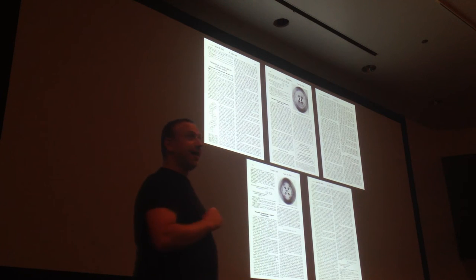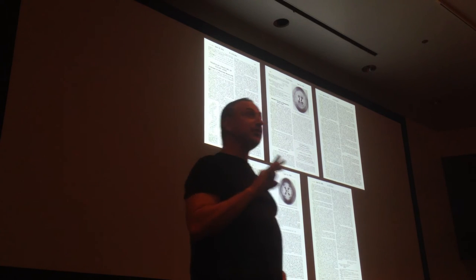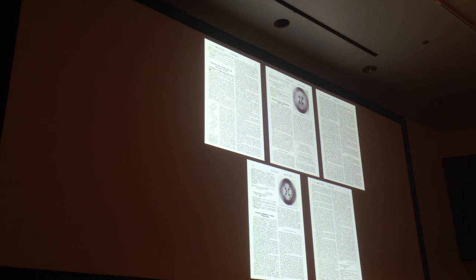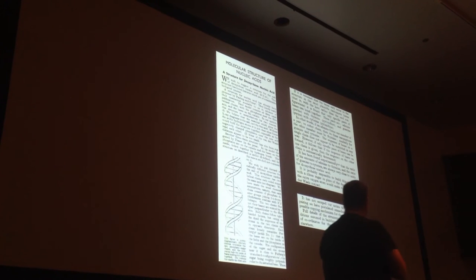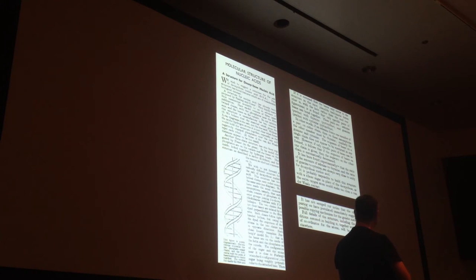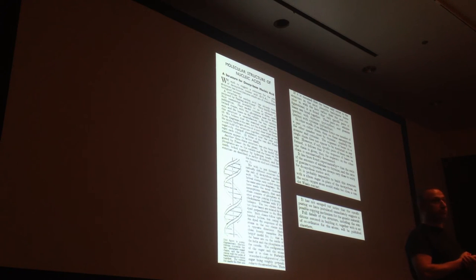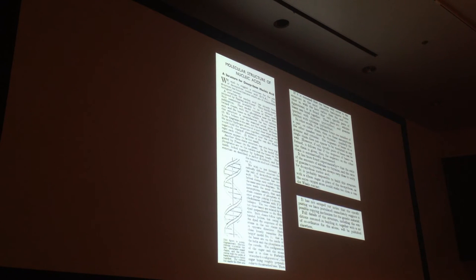He guessed what it looked like by model building, with no data — it's actually rather remarkable. Not only does he build a model, he goes on to say: 'It has not escaped our notice that the specific pairing we have postulated immediately suggests a possible copying mechanism for genetic material. Full details of the structure, including conditions assumed in building it, together with a set of coordinates for the atoms, will be published elsewhere.' They never published it. Franklin and Wilkins published it, but Watson and Crick never actually published the crystal structure.